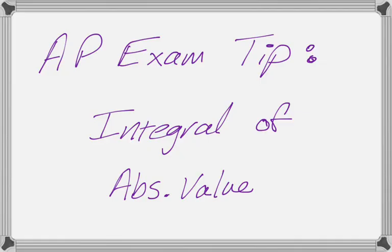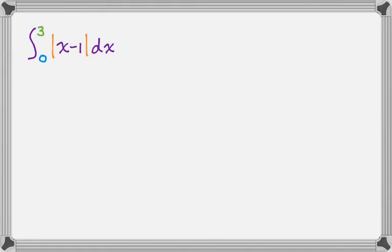So these pretty much always look exactly the same, so we're just going to do two examples to show you how I think you should deal with them. So if we have something like the integral from 0 to 3 of the absolute value of x minus 1 dx, what I'm going to do is I'm going to graph this thing.